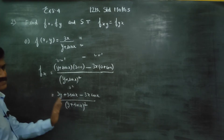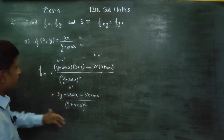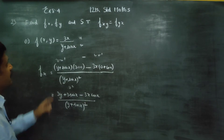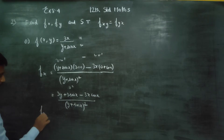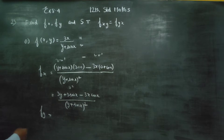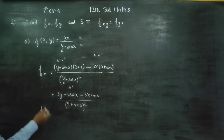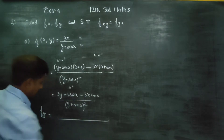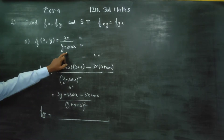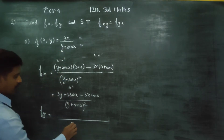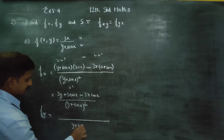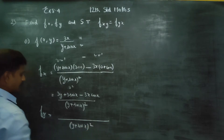Now we find fy — partial differentiation with respect to y. We apply the u/v formula again. v squared is (y plus sin x) squared, and we set up v into u dash.